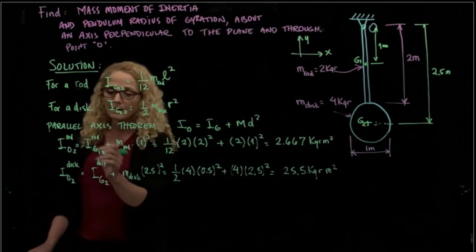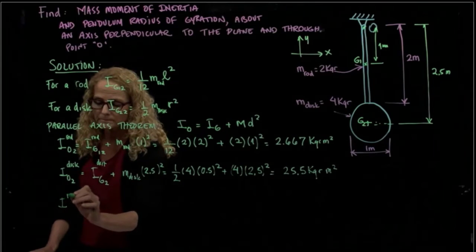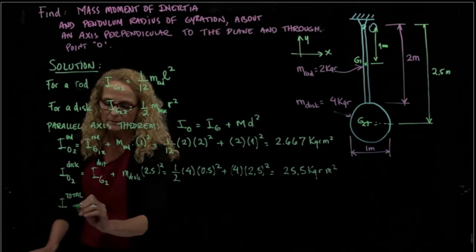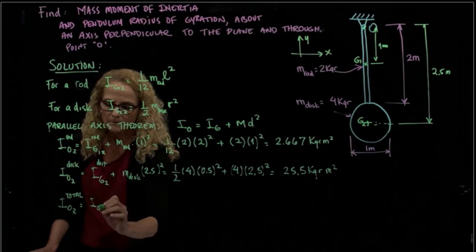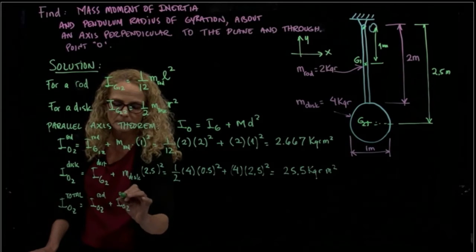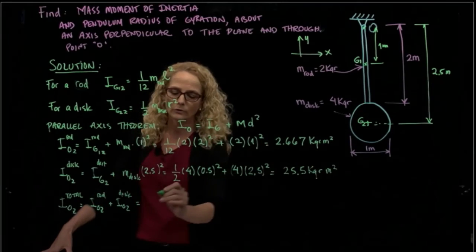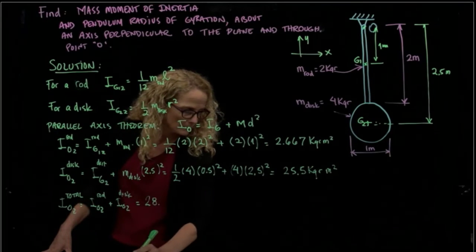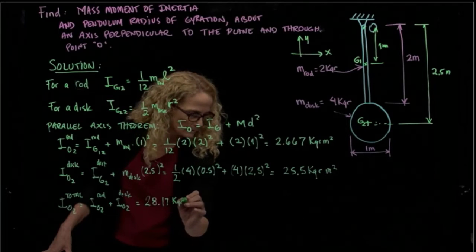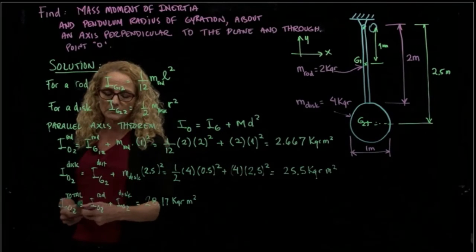Now I can get the total mass moment of inertia about point O. Total would be that of the rod, plus that of the disk. And that gives me a moment of inertia. I add those two values, 28.17 kilograms meter squared. So that's the first value that we were asked to find.